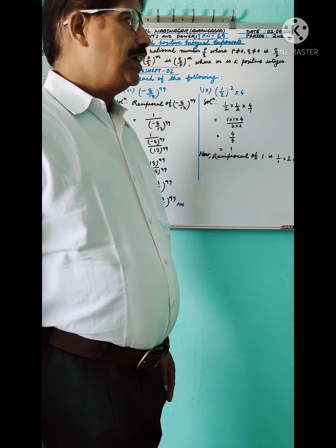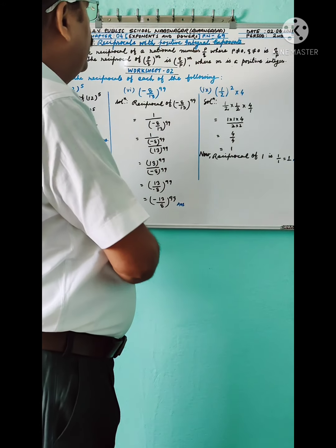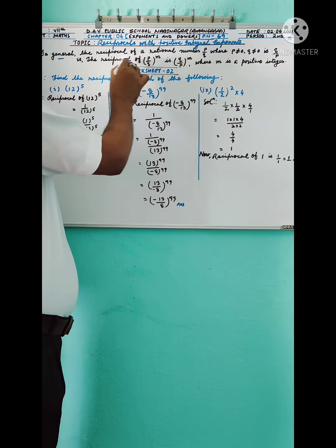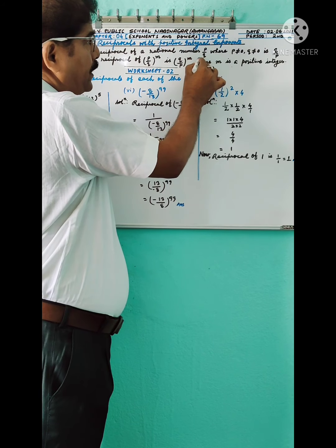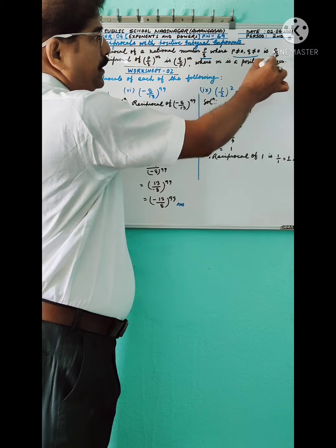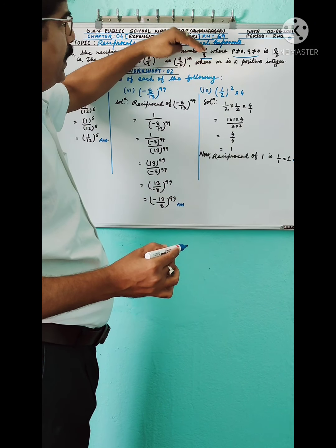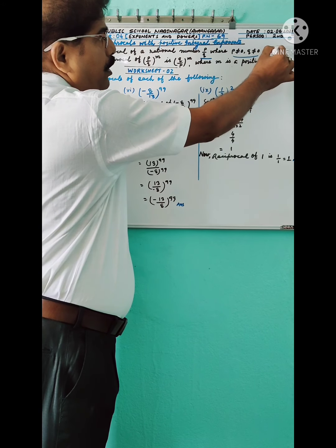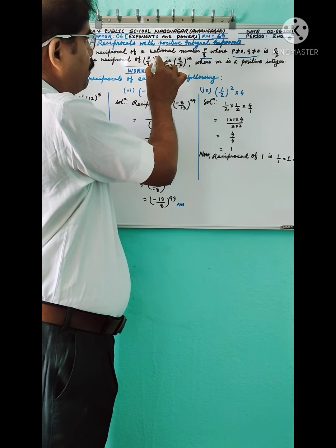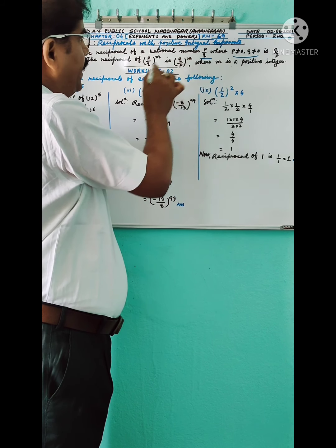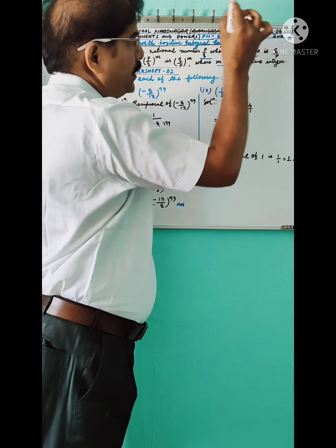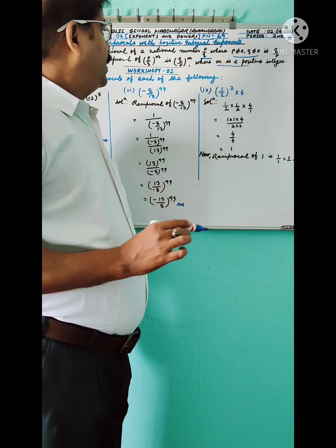Now, reciprocal with positive integral exponents. In general, the reciprocal of a rational number p by q, where p ≠ 0 and q ≠ 0, is q by p — that means we exchange the numerator and denominator. So the reciprocal of (p/q) to the power m is (q/p) to the power m, where m is a positive integer.